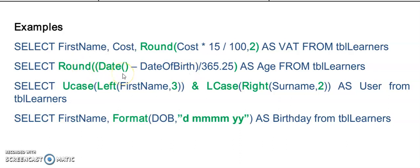Here I'm possibly creating something like a username. The first part of this username will be in capital letters and will consist of the first three characters of the person's first name. Then, combined to that, concatenate it with the ampersand, I then have the lowercase of the person's surname but of the last two characters of the surname.